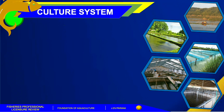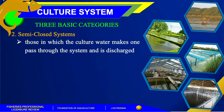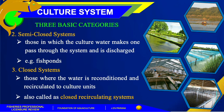The second category is the semi-closed system, where the culture water makes one pass through the system and is discharged. The third category is the closed recirculating system, where water is reconditioned and recirculated to culture units.